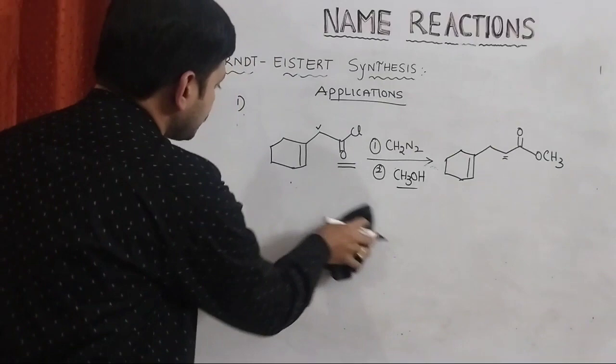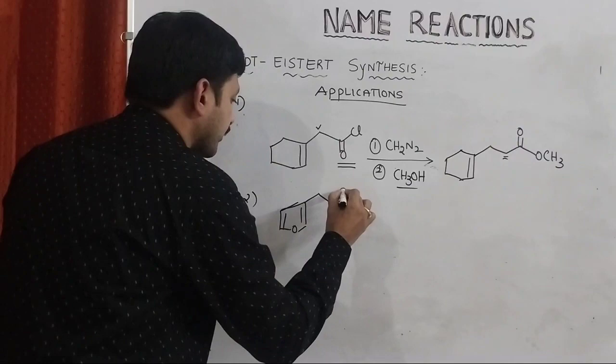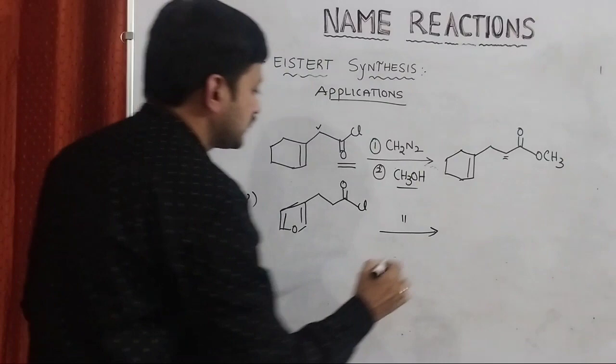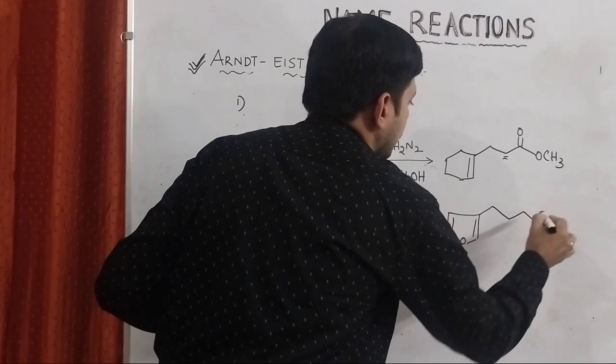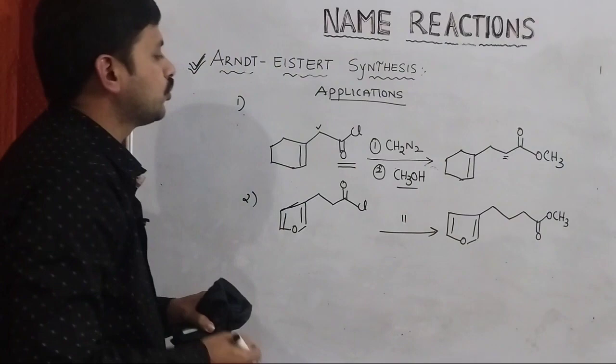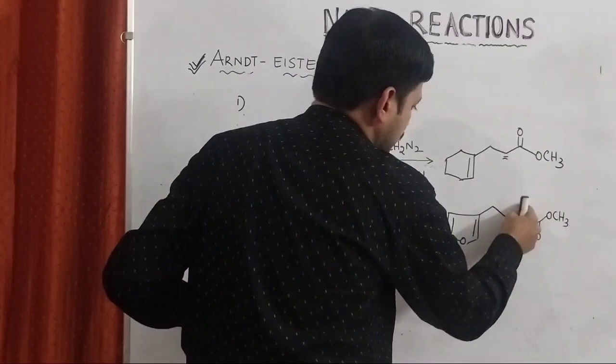The second application: under the same conditions, initially the acid can produce an OH (carboxylic acid), which is later converted into OCH3 (ester). Here, two carbons are present and one more carbon has been introduced. This is another application of the synthesis.